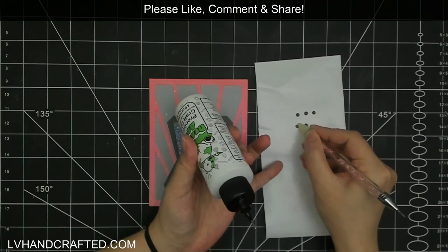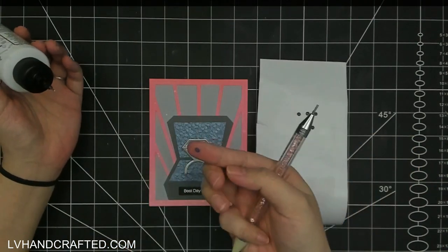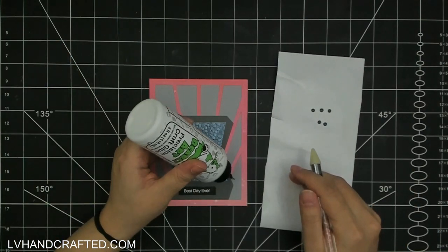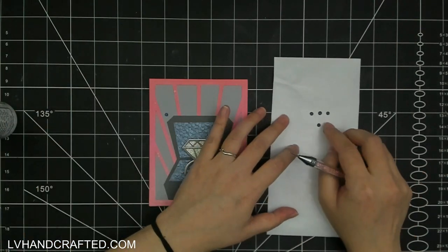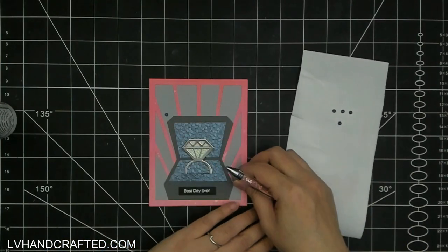I've just added a really simple sentiment. This is actually from the simple sentiment stamp and die set, which is great. That's the one that has a lot of sentiments all in one stamp and then a single die that will cut them all out at the same time.